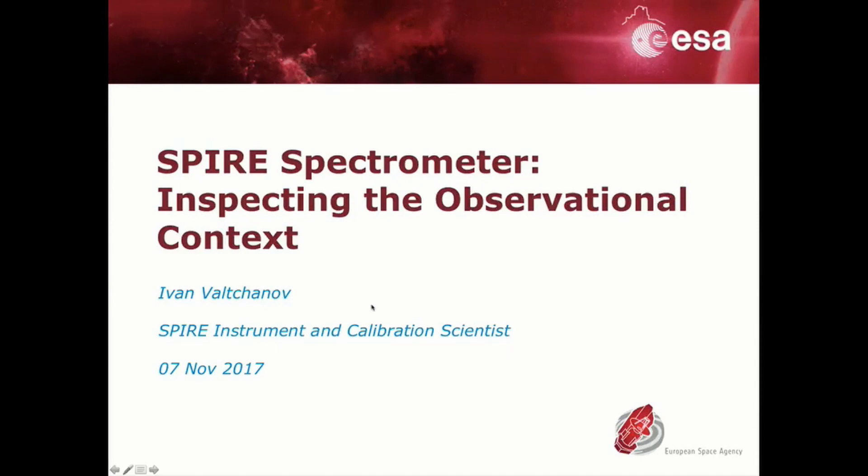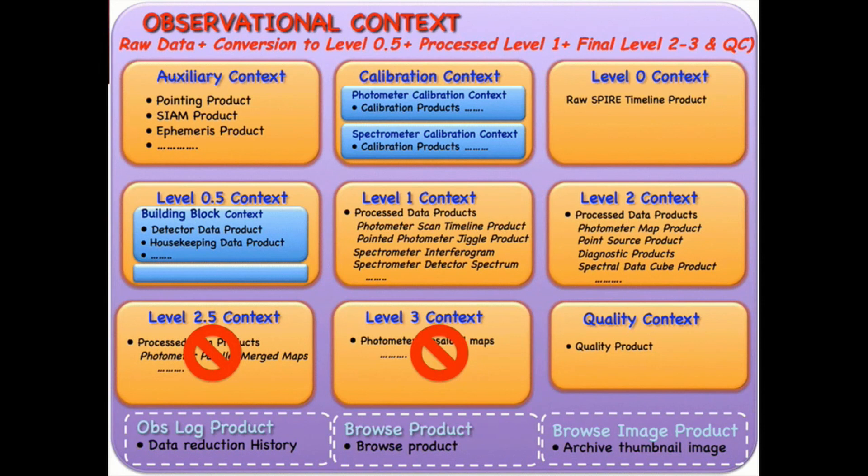In this Herschel Science Centre short video tutorial we shall inspect the content of a SPIRE spectrometer observational context. Each SPIRE spectrometer observation is packed within a special container called the observational context. The context contains the different processing levels from the raw data at level 0 to the highest pipeline process level of level 2.